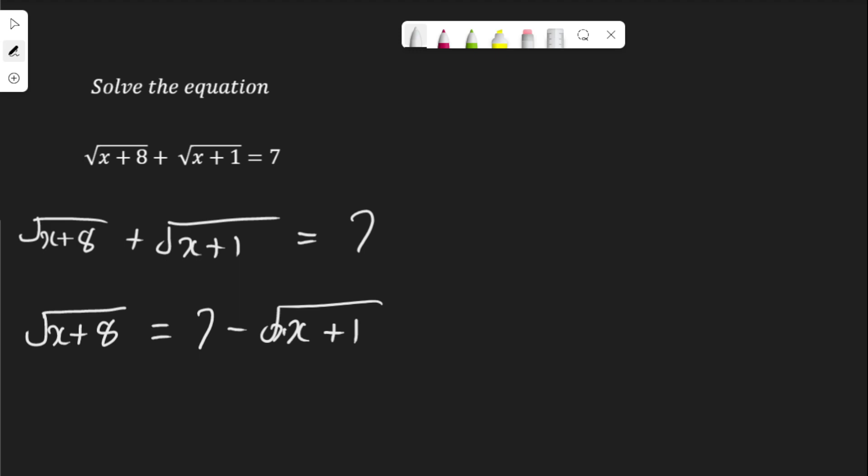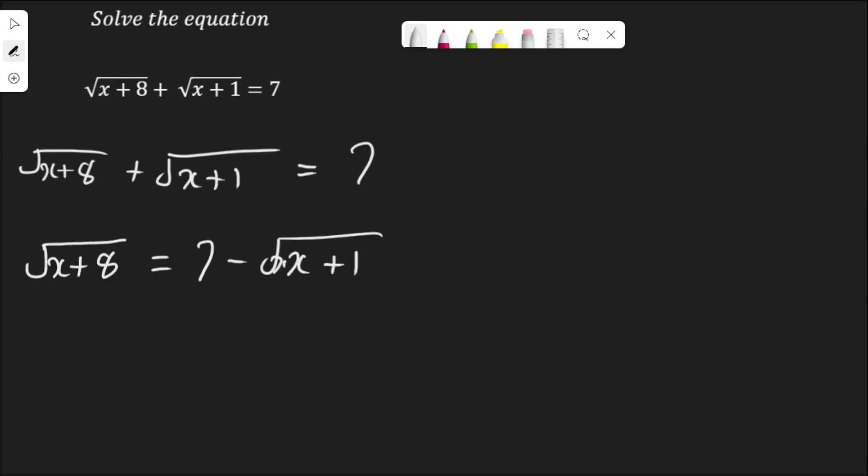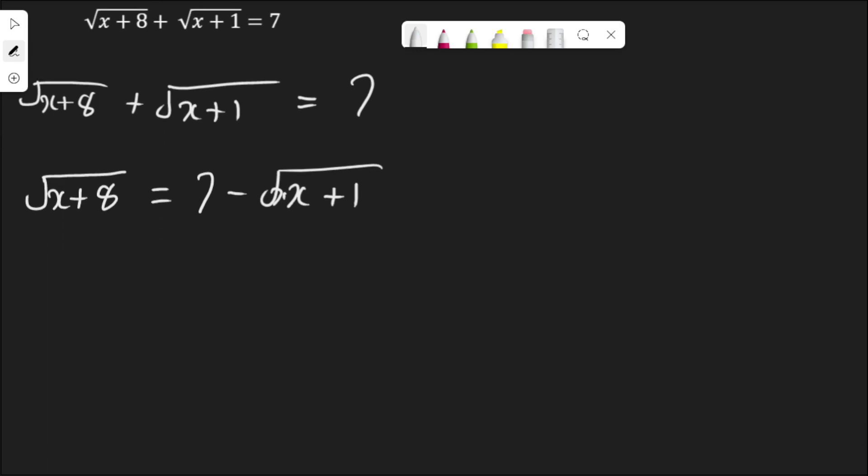I will square both sides to clear this radical on the left hand side. Squaring the right hand side will not clear the radical because of this 7 outside. Let's start by clearing the left hand side. I have root x plus 8 squared equal to 7 minus root x plus 1 squared.